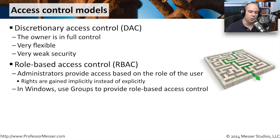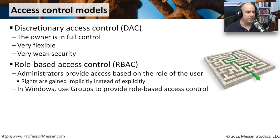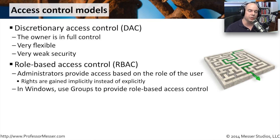A step up from that is role-based access control. This is where we define what access you may have to a resource based on the role of the user. You may be in a group of people, in a department, or part of a team, and we'll say that if you're on this team, you have the ability to read these particular files. Role-based access control also gives you a little more control over what's going on and scales a bit better. In Windows, we use groups to accomplish this — you add all the different users to a group and simply assign rights to the entire group at one time.